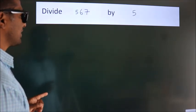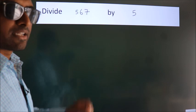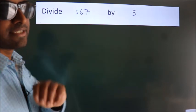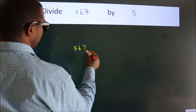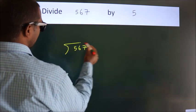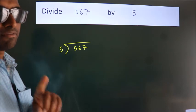Divide 567 by 5. To do this division, we should frame it in this way. 567 here, 5 here. This is your step 1.